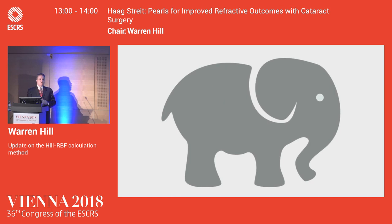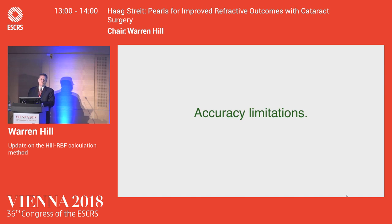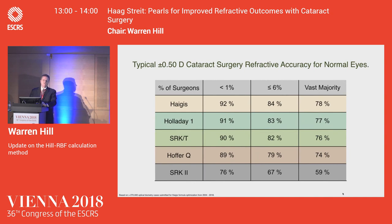Every time we go into the operating room, the elephant in the room for all of us is IOL power selection accuracy. We all know that vergence formulas have limitations, because one part of a vergence formula — the effective lens position — can only be estimated. It cannot really be calculated.